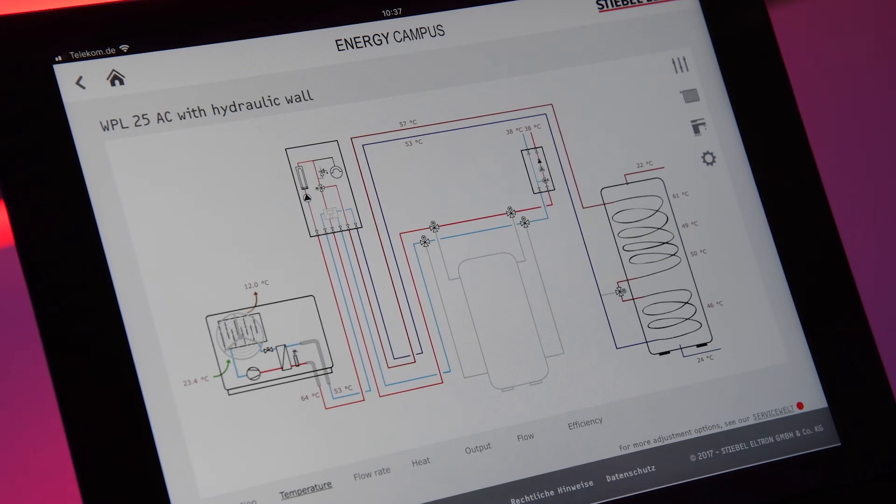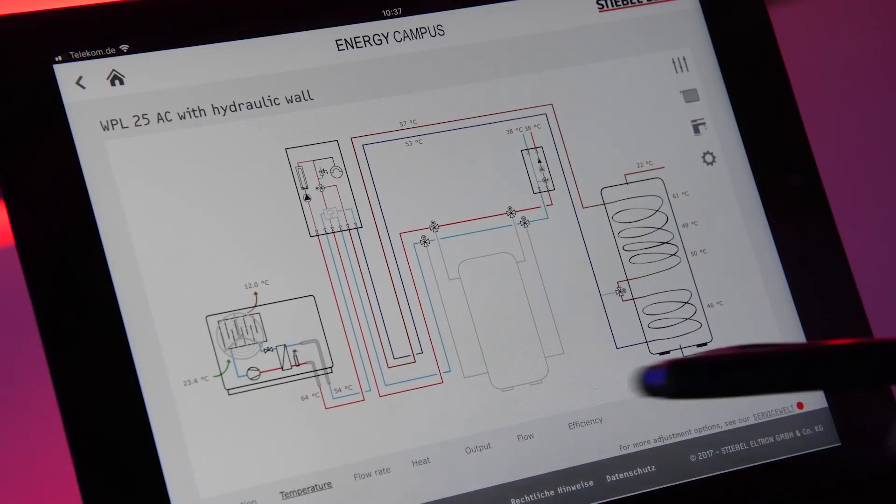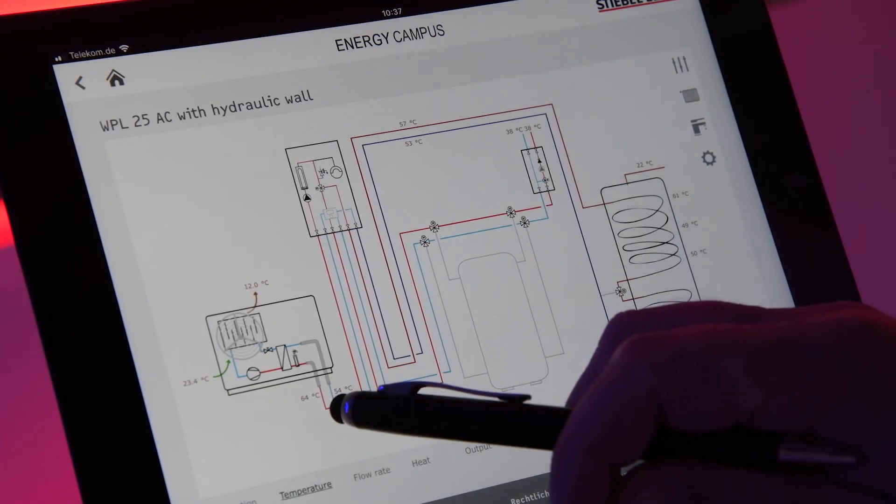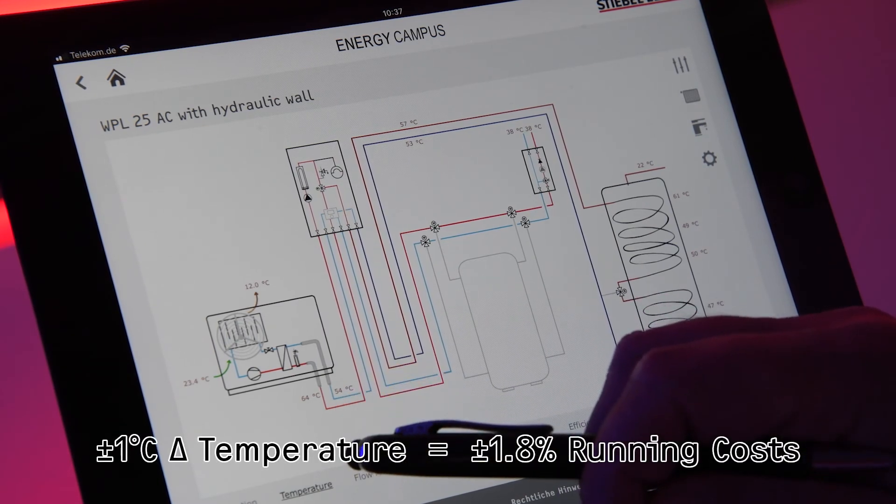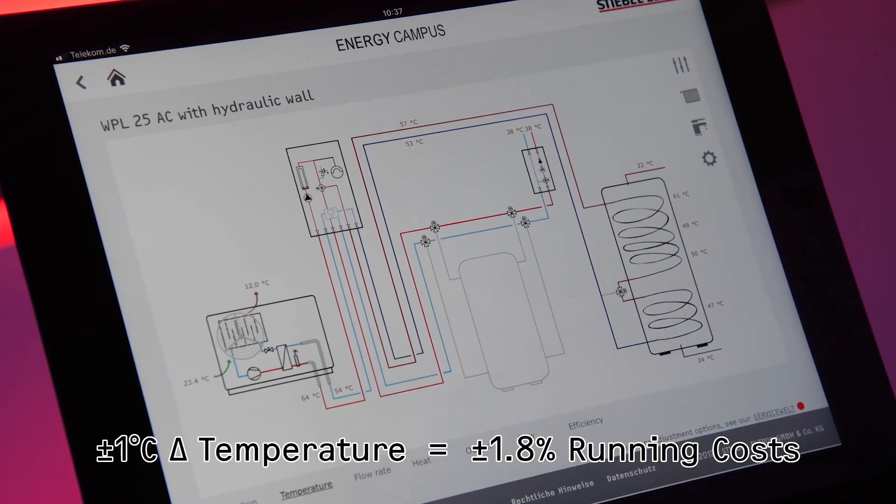The most important information is any degree C higher flow temperature you have while doing domestic hot water is increasing your running cost of doing domestic hot water 1.8%.